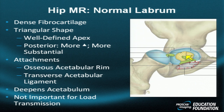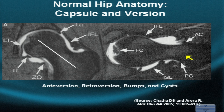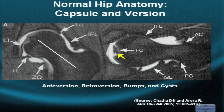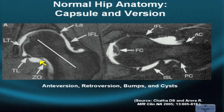Here are two high-resolution MR images of the hip — one para coronal, the other para axial. The para axial is obtained by taking a line bisecting the femoral head, neck, and trochanteric region. A series of para axial images may be used to evaluate anteversion, retroversion, bumps, and cysts.